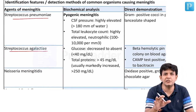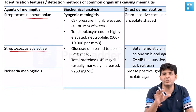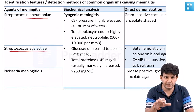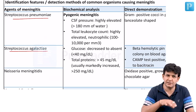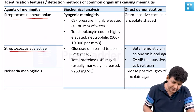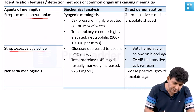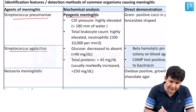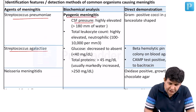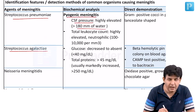Pneumococcus is the most common cause across all age groups, except in neonates where GBS plays a role. In all other age groups, Streptococcus pneumoniae is number one.